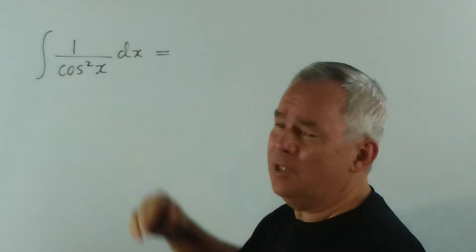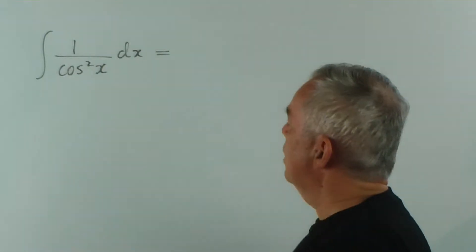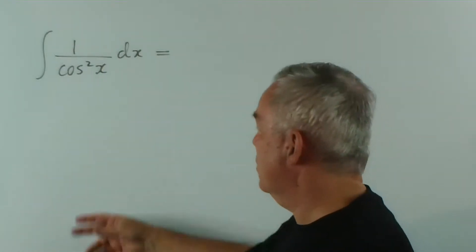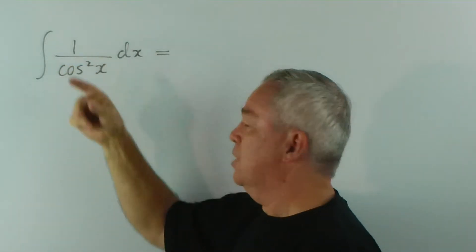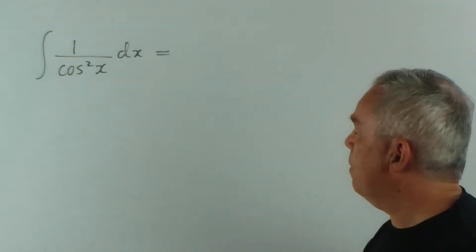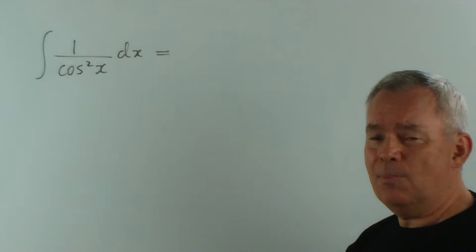Because we can see it's trigonometric, we can see that it's not a logarithmic structure because there's a 1 on the top and the derivative of cos squared x is certainly not 1, so it doesn't follow a logarithmic pattern.